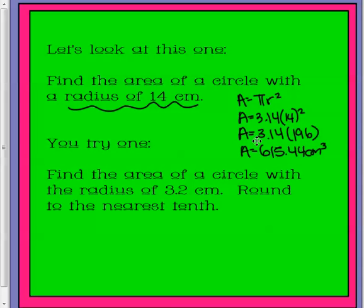Multiply that by pi, and we get 615 and 44 hundredths centimeters squared. Not cubed, whoops.